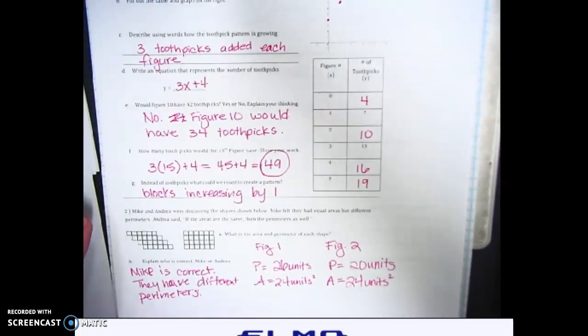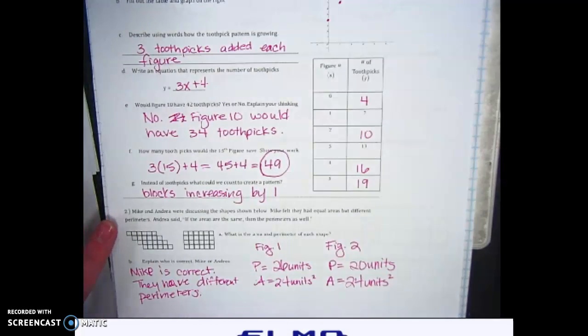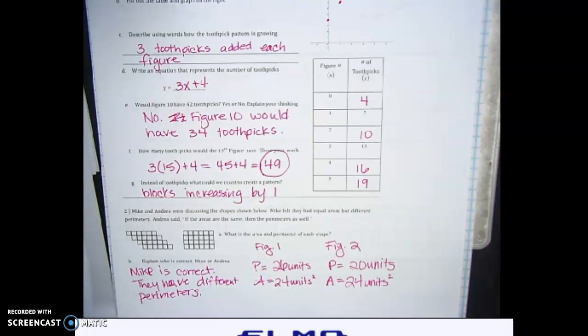Down at the bottom, question number two says Mike and Andrea were discussing the shapes shown below. Mike felt they had equal areas but different perimeters. Andrea said if the areas are the same, then the perimeters are as well. So part A, they want you to find the area and the perimeter for each figure.